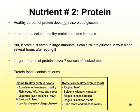A healthy portion of protein does not raise your blood glucose. It's important to include healthy protein portions in your meals at breakfast, lunch, and supper. But if protein is eaten in large amounts, it can turn into glucose in your blood several hours after eating it — about four to five hours later. Large amounts of protein equals over seven ounces of cooked meat. So if you go out to a steakhouse and have an eight- or ten-ounce steak, that's excessive protein and will affect your sugars later.